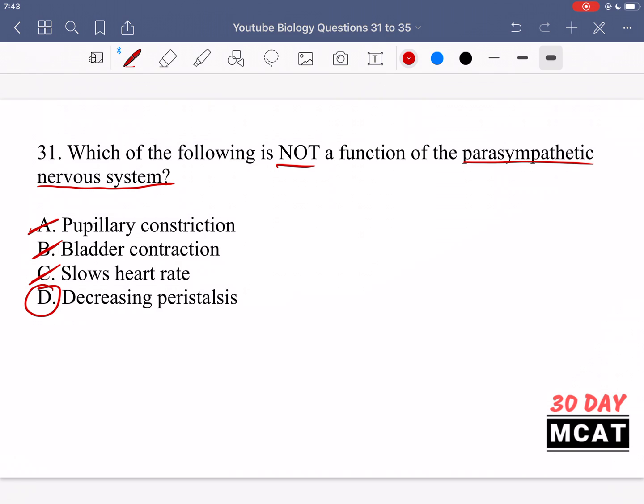Urinating, digesting things, and getting rid of food from the intestines are all part of the parasympathetic nervous system. But the sympathetic nervous system, the fight-or-flight one, is the one which decreases peristalsis because it doesn't want you focusing energy on digesting food because you have more important things like fighting for your life.